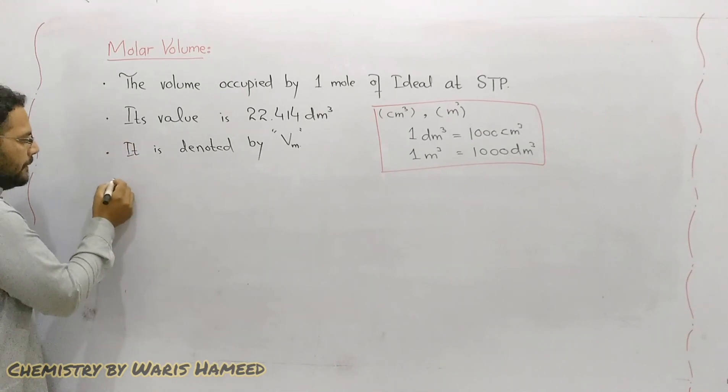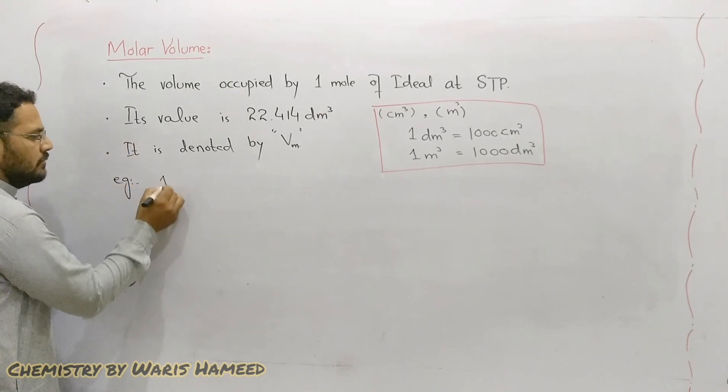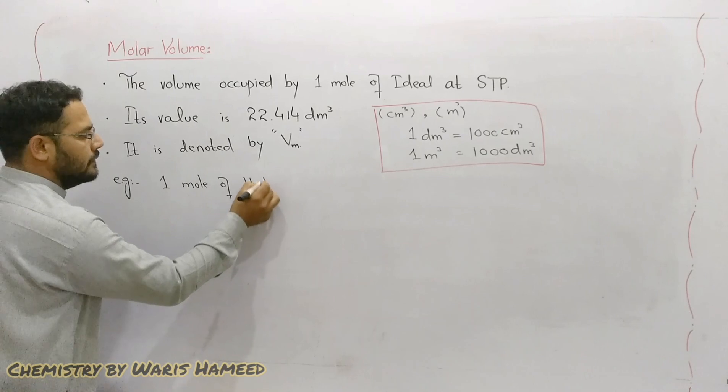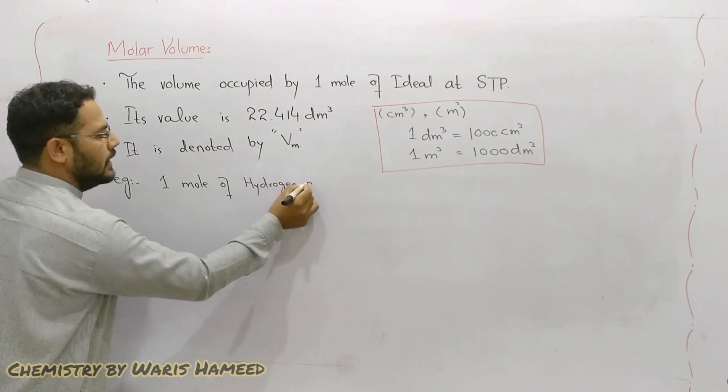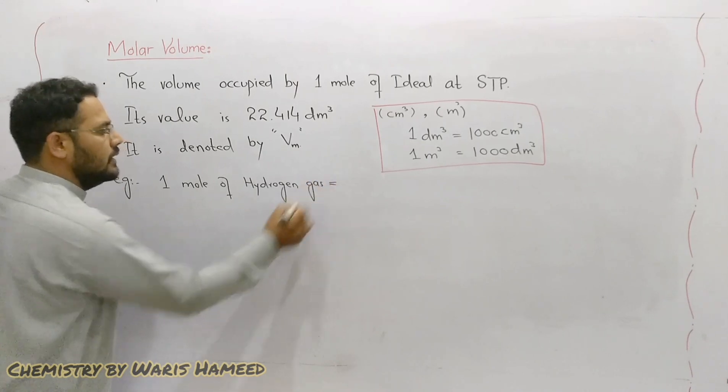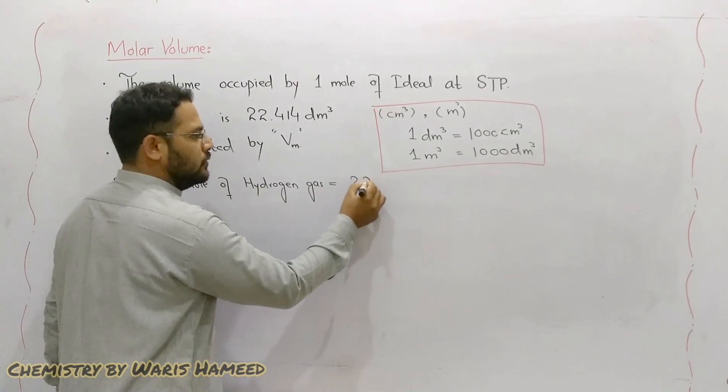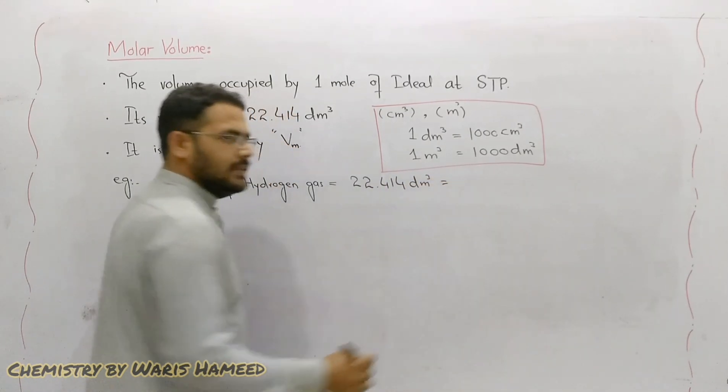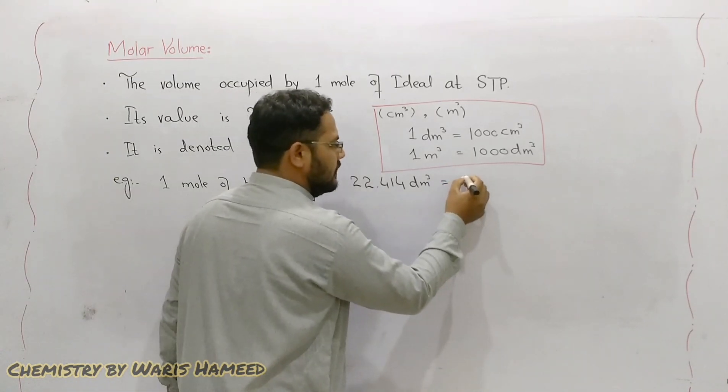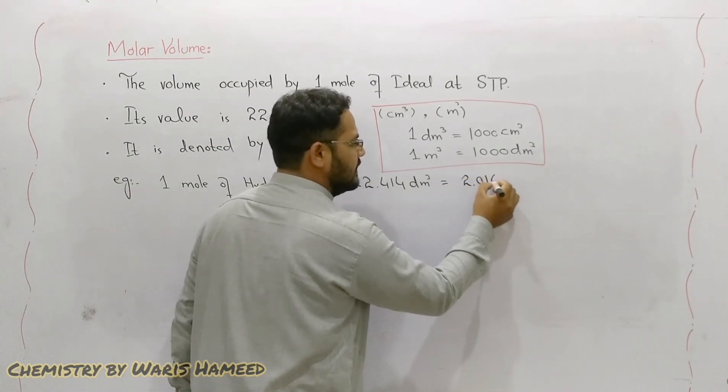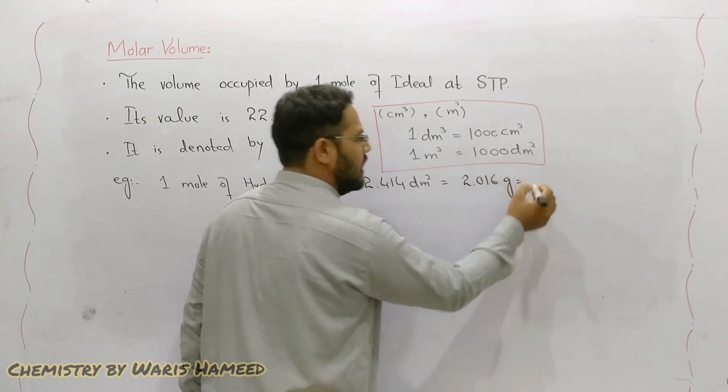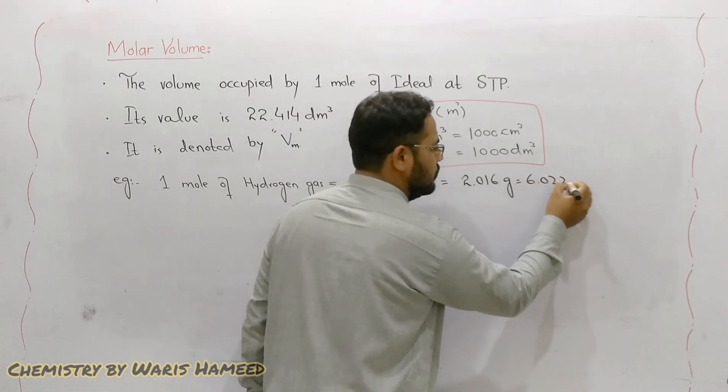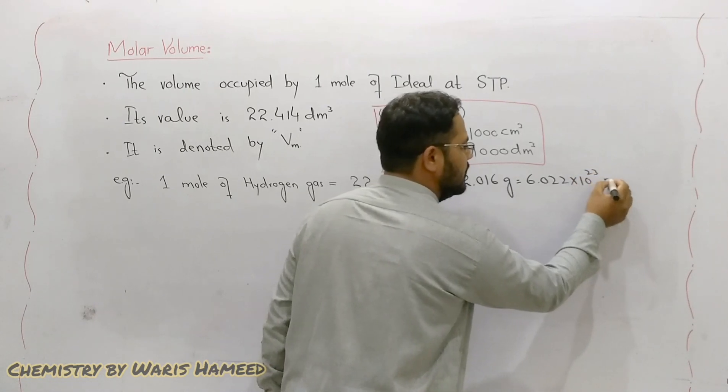For example, if we have one mole of hydrogen gas, it means its value is 22.414 dm³ or we can say it is 2.016 g of hydrogen and we can also say that there are 6.022×10²³ molecules of hydrogen.